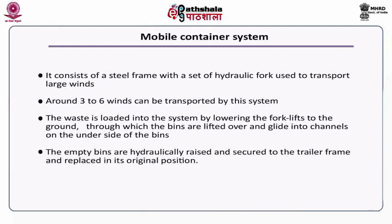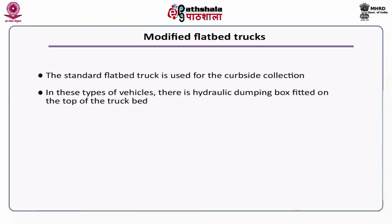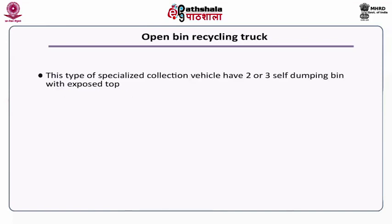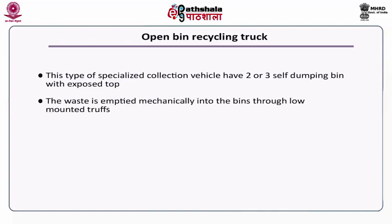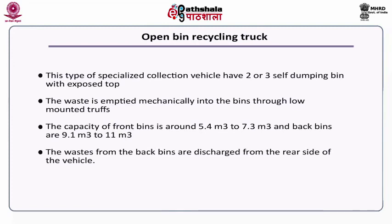The empty bins are hydraulically raised and secured to the trailer frame and replaced in their original position. The next type is a modified flat bed truck — the standard flat bed truck is used for kerbside collection, with a hydraulic dumping box fitted on top of the truck bed. The dumping box has three to four compartments with a standard volume of around 14.7 meter cube. The open bin recycling truck is another type having two or three self dumping bins with an exposed top; waste is emptied mechanically into these bins through low mounted troughs. The capacity of front bins is around 5.4 to 7.3 meter cube and back bins are 9.1 to 11 meter cube, with waste from back bins discharged from the rear side.